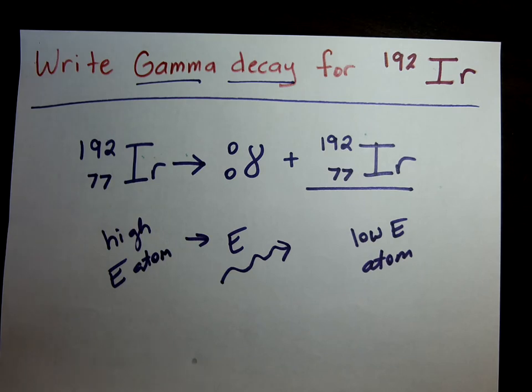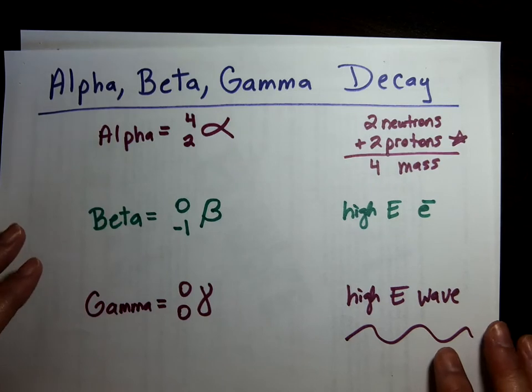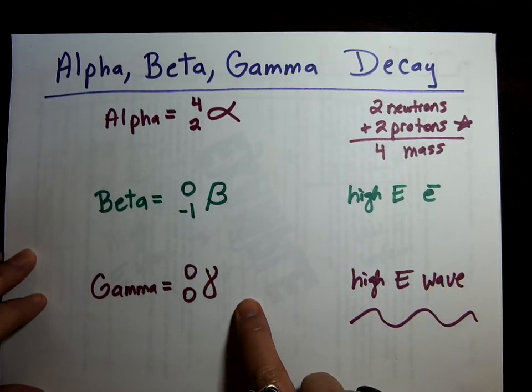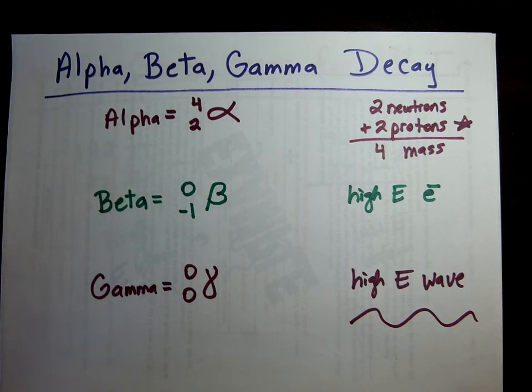So, perfect. We have written an alpha, a beta, and a gamma decay or emission reaction. Good job, students. Check you later. Bye-bye.